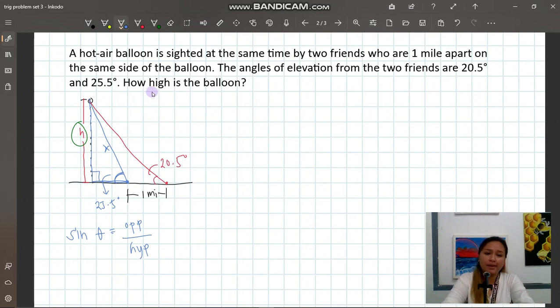So this problem is not a one-step answer. Can there be a way that we could solve for X? Most likely. Because if we focus here, we have another triangle.